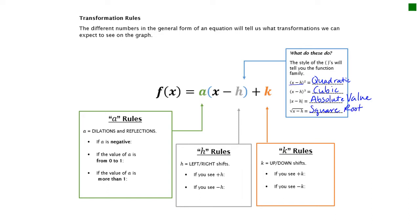All the other letters tell you something as well. The rules for the a value: that's always the number in front of your parentheses, absolute value, or radical. Those are talking about dilations and reflections.